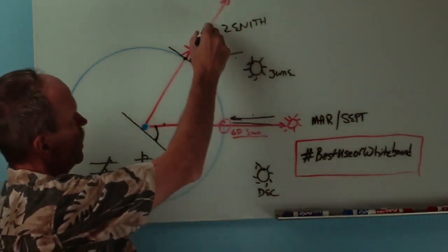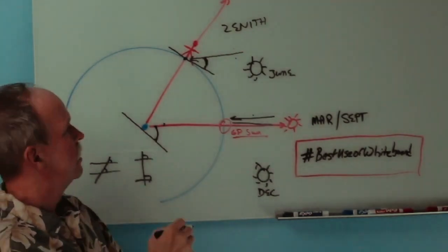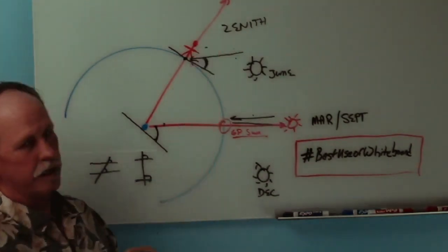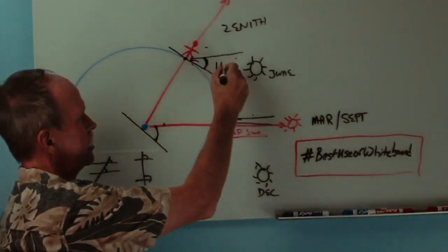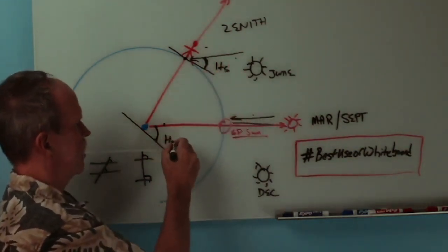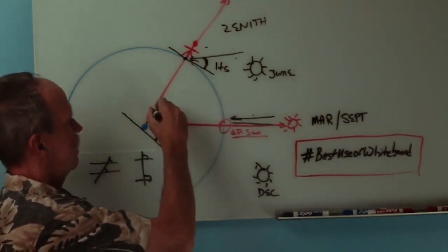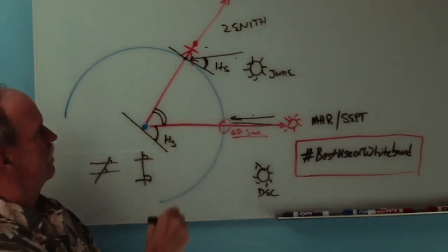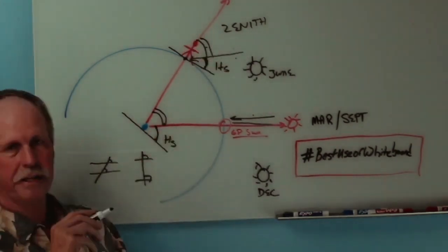This is a 90 degree angle to our horizontal line. So what is this angle right here? Well, it's 90 degrees minus HS, which is the angle we measure from our sextant. If we subtract that from 90, we get that angle right there, and that would be that angle right there. That determines our latitude.